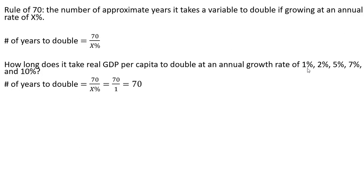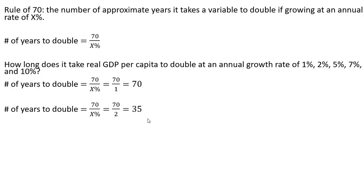For the first example, at a 1 percent annual growth rate, 70 divided by 1, it'll take GDP per capita 70 years before it doubles. If the growth rate is 2 percent, 70 divided by 2 will take 35 years for that dollar amount to double. If the growth rate in GDP per capita is 5 percent annually, it'll take 14 years for GDP per capita to double.